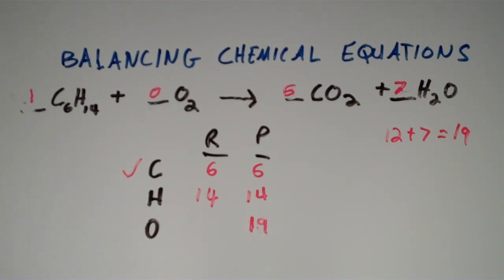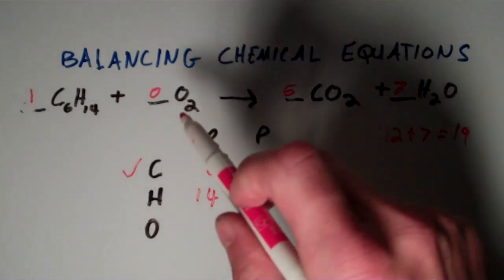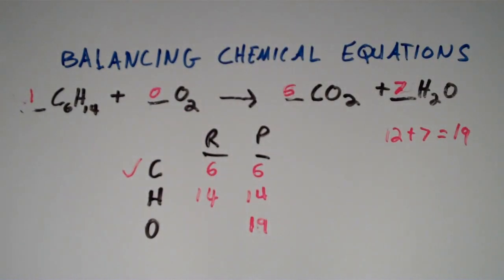So now we're almost done. We have three of our coefficients, and now we only need one more. So we have zero oxygens over here, and we have 19 oxygens over here.